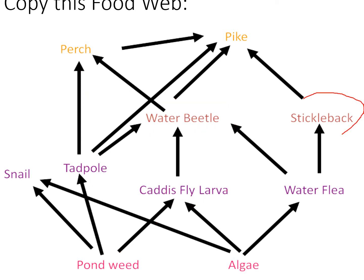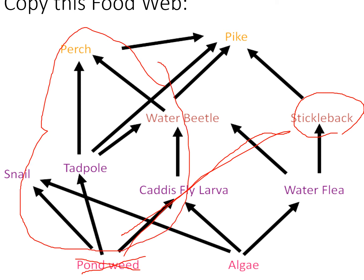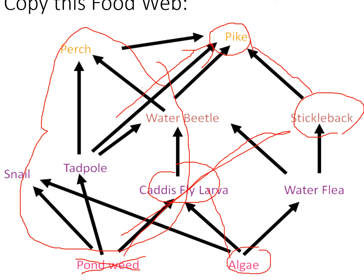The last question was: what would happen to sticklebacks if pondweed became extinct? This is quite a complicated one because there's quite a big gap between sticklebacks and pondweed. However, if you look at this side of the diagram, quite a lot of organisms are reliant on pondweed. So things like the pike are going to have to eat more sticklebacks because other organisms will be in less supply. Also, caddis flies will have to eat more algae since there's no pondweed available. So sticklebacks are very likely to decrease because of increased predation and less food.